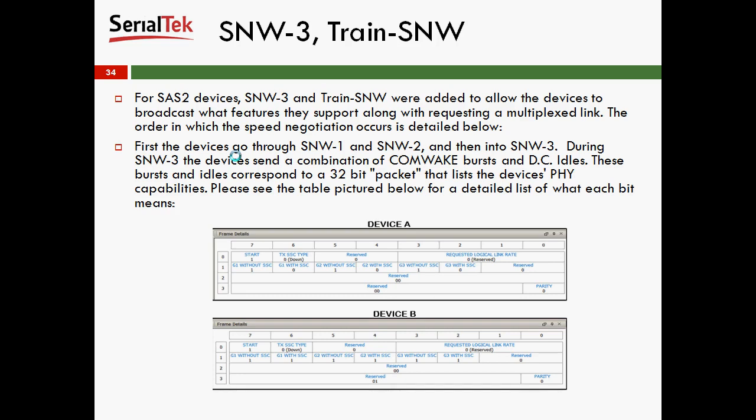First, devices go through SNW-1 and SNW-2, and then they go into SNW-3. During SNW-3, the devices send a combination of CommWake bursts and DC idles. These bursts and idles correspond to a 32-bit packet, or series, that lists the device's PHY capabilities. In our frame details view, you can see some decoded PHY capability bits. Device A has Gen-1 at 1.5 gig without SSC, Gen-2 at 3 gig without SSC, and Gen-3 at 6 gig without SSC.